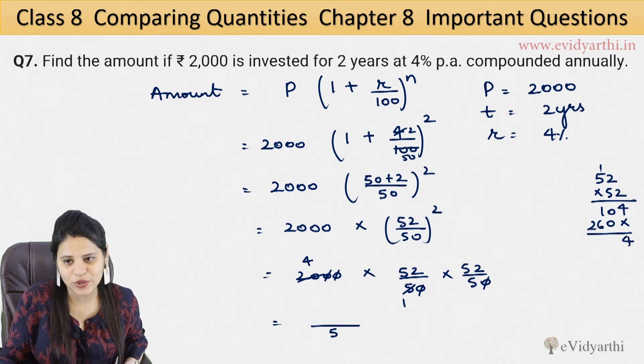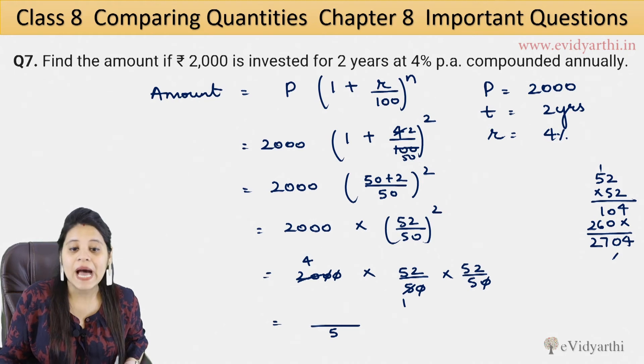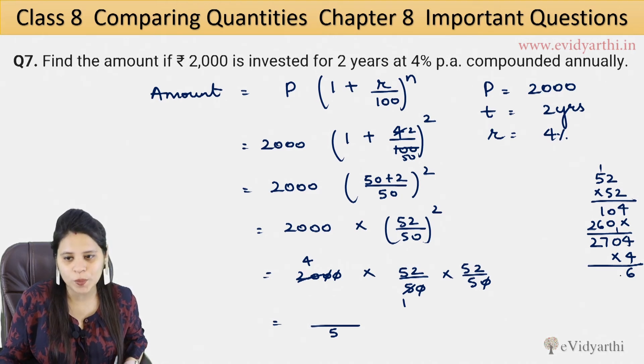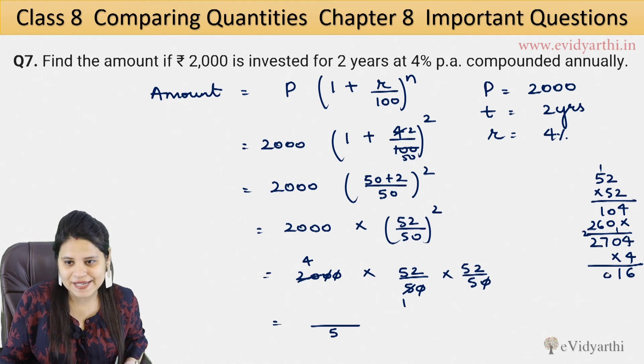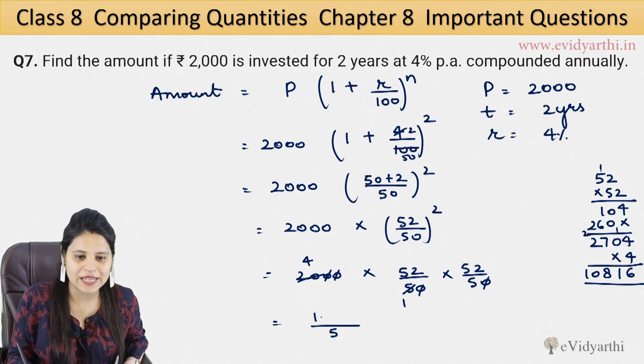So here is 4, 0, 6 plus 1 is 7, 2. Now we have to multiply this from 4. So 4 into 4 is 16, 4 times 0 is 0 plus 1 is 1, 7 times 4 is 28, and 4 times 2 is 8. So here is 10816.